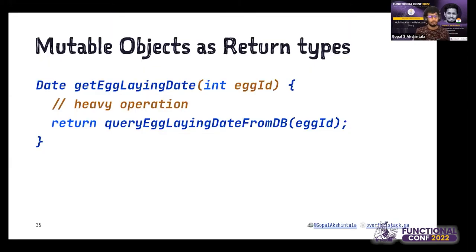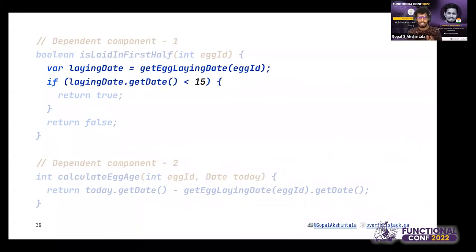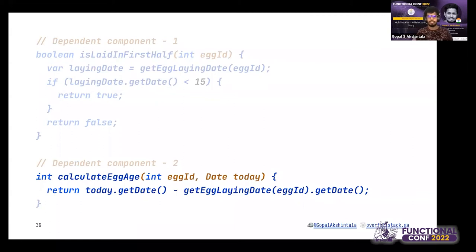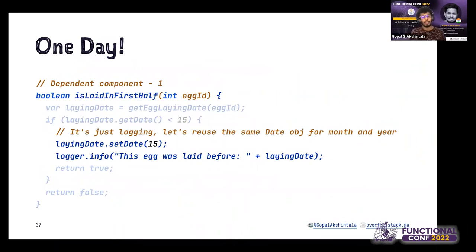This is a problem when you pass mutable objects as params. Mutable objects as input params is unholy for isolation. What about ones with return types? There's an even bigger problem. Take one more example. I love boiled eggs, so I keep using eggs in all my examples. Imagine there is a laying egg date function that has to do a DB operation to get the laying date of the egg based on its ID—it's a heavy operation. Assume there are two dependent components in two different modules which are not connected. The first component, isLaidEggInFirstHalf, checks whether the laying date is before the 15th of that particular month and returns true or false. The second component calculates the age of the egg based on the laying date—it differs from the current date.